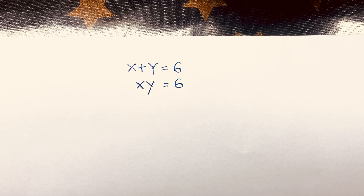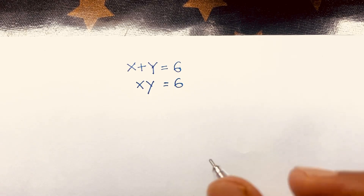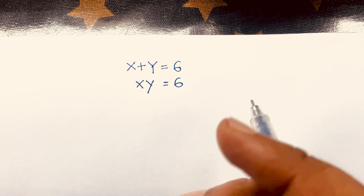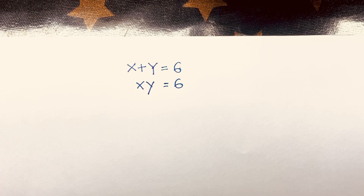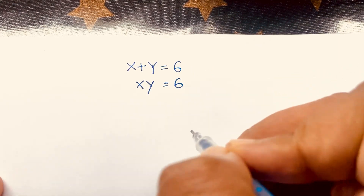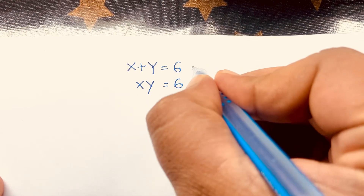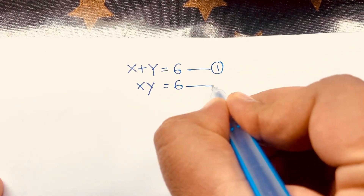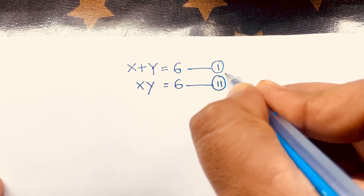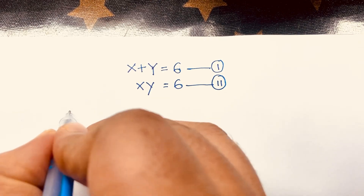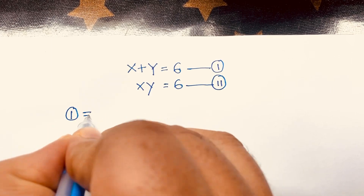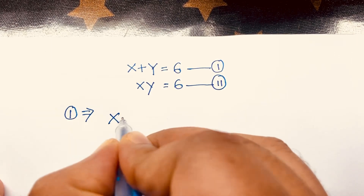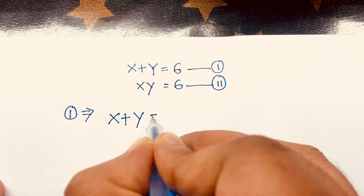We'll solve this question: x plus y is equal to 6, and x times y is equal to 6. We need to find the value of x and y. This is our first equation and this is our second equation.